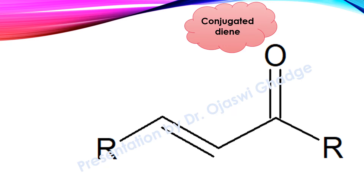This is the conjugated diene system which we are studying today. We are calling it as diene because there are two double bonds present, and since those two double bonds are in conjugation, we call it as conjugated diene. For such conjugated diene structures, the lambda max can be calculated using the rules given by Woodward and Fisher.